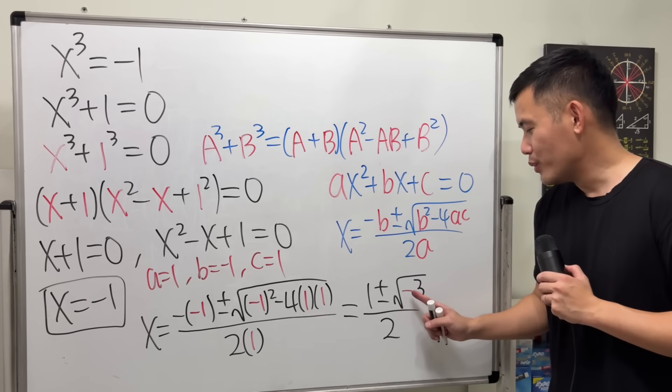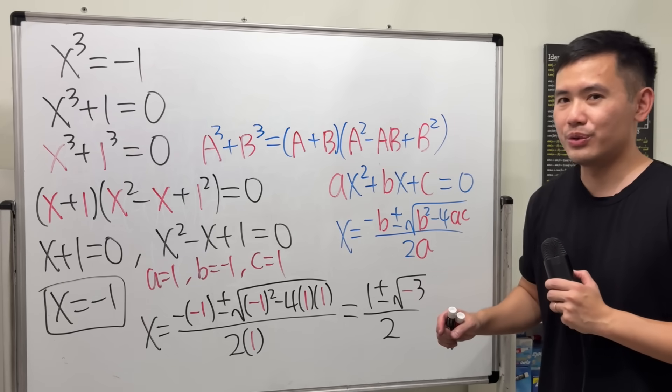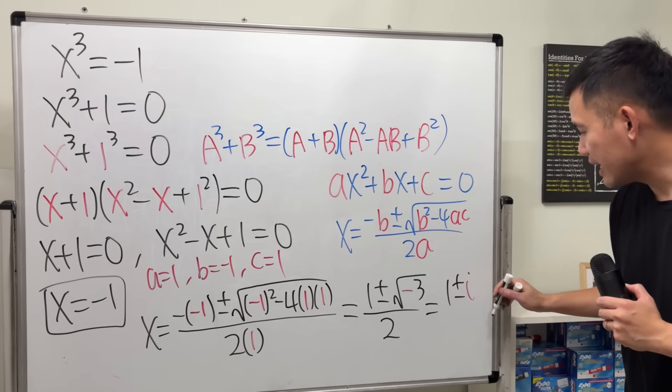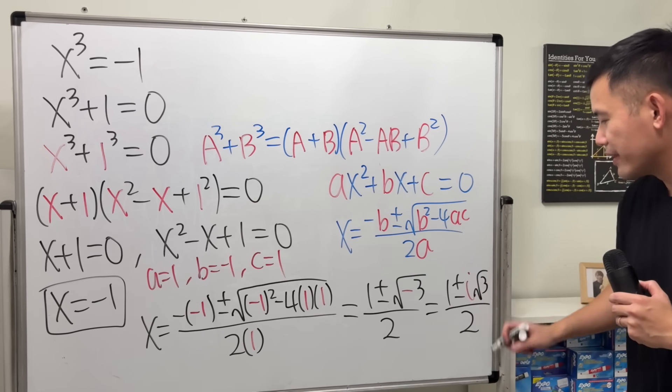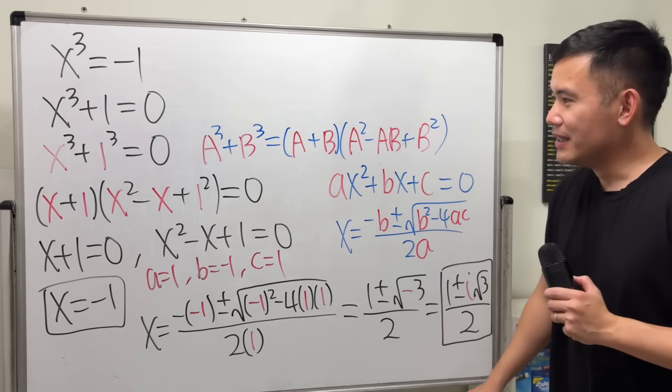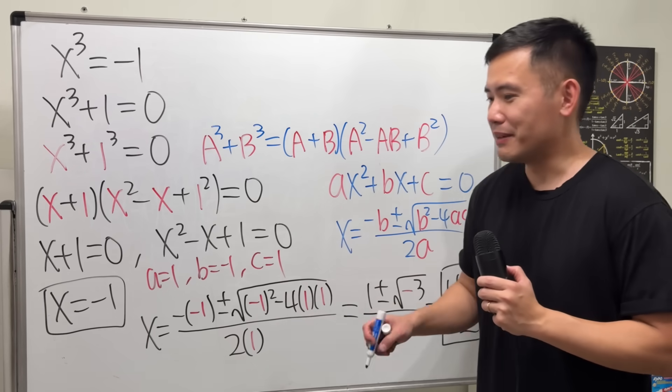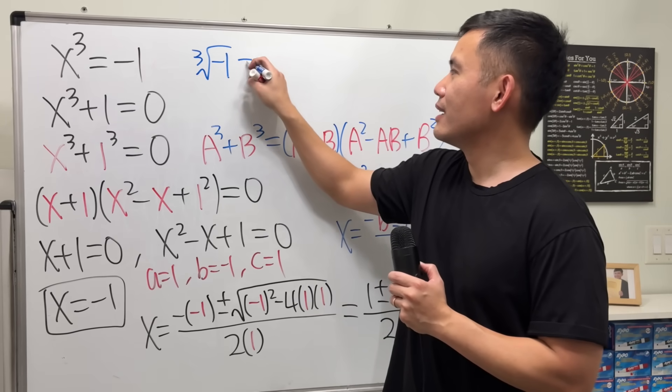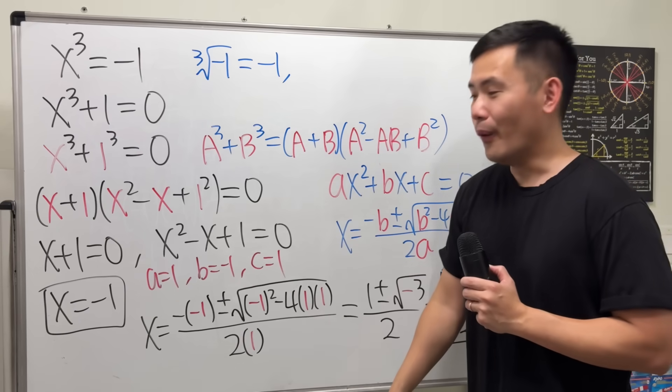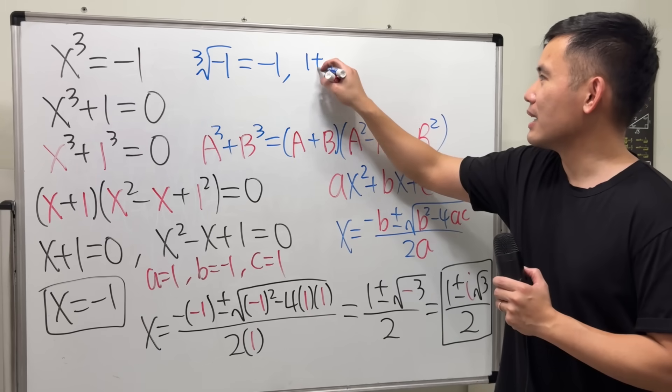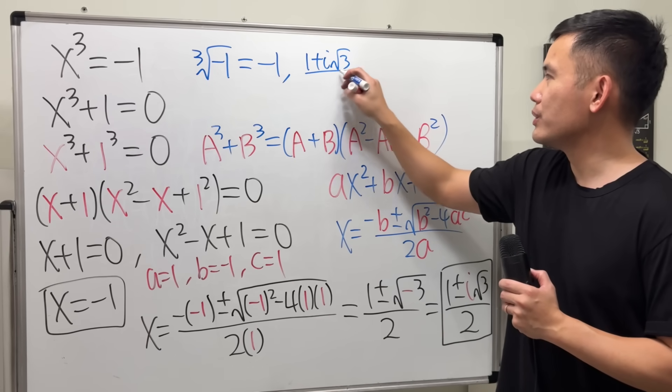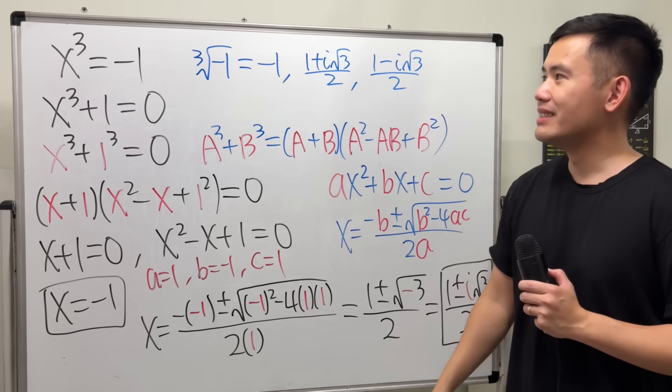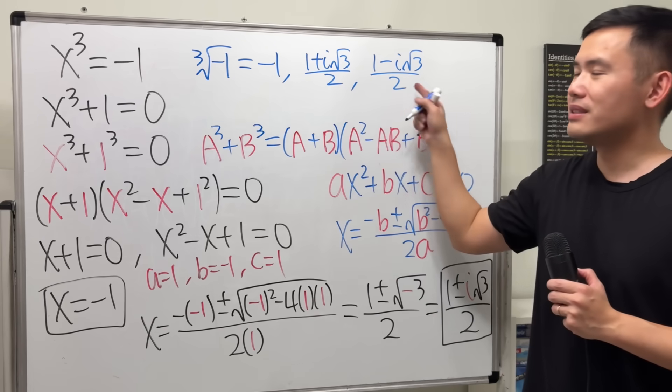Now, as I mentioned earlier, when we have a negative inside of the square root, that's the i. So we get 1 plus or minus with the i and then square root of 3 over 2. So we have two complex solutions right here. Okay, if you would like to have something a little bit more exciting, you could do the following. Cube root of negative 1, you can write it as negative 1, or the next number is 1 plus i square root of 3 over 2, and then lastly, 1 minus i square root of 3 over 2. Cube root of negative 1 is equal to this and this and that.